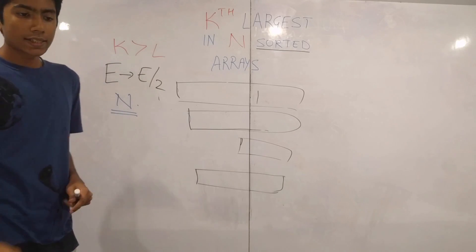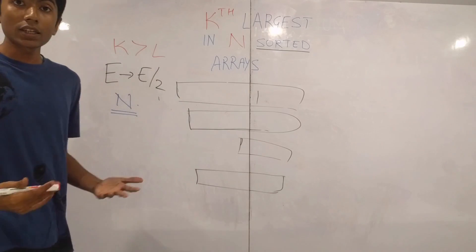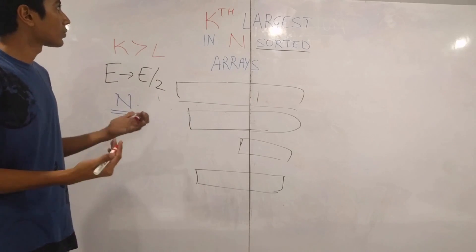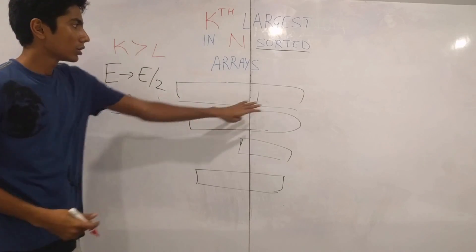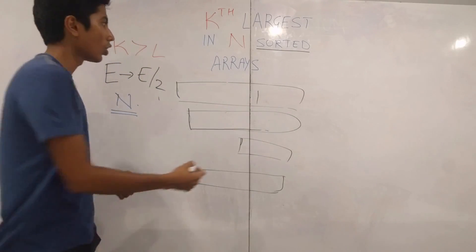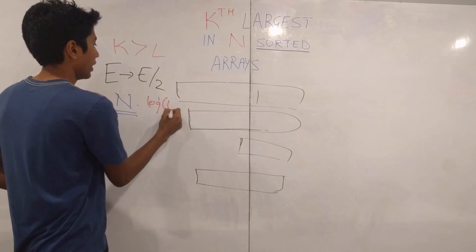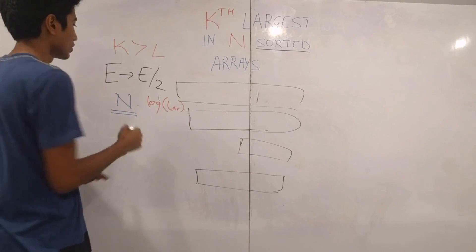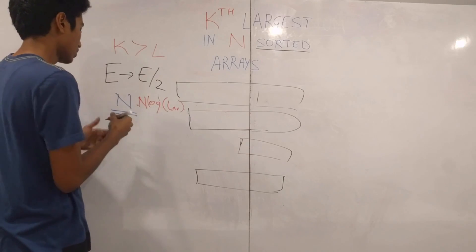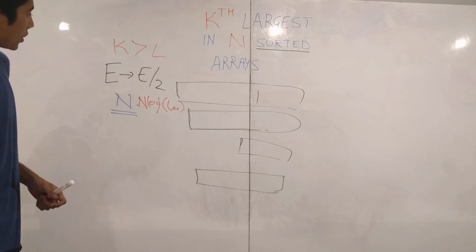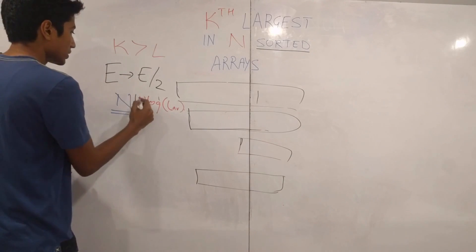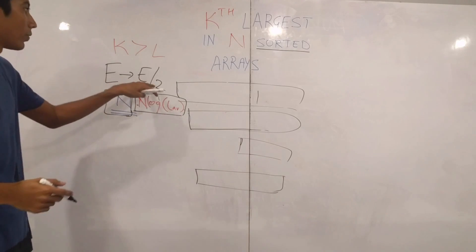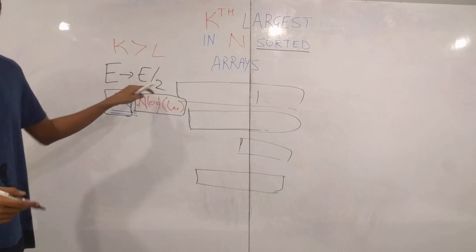Another thing to notice is that the complexity of each operation is log, which is binary search factor, log of l average into the number of arrays that we have. So that is into n. So this is just one operation. Let's keep this aside. And this is aside. This is the number of operations you need for going from e elements to e by two elements.